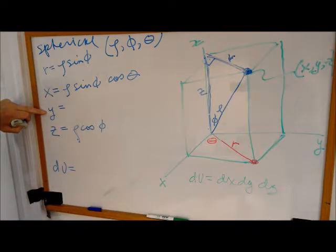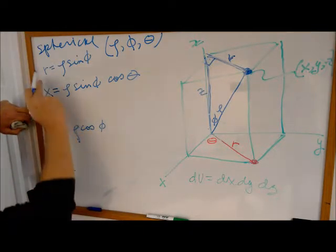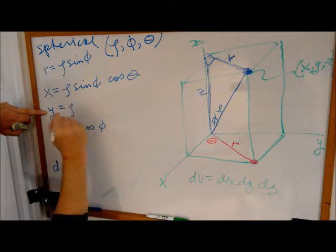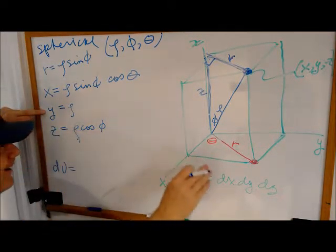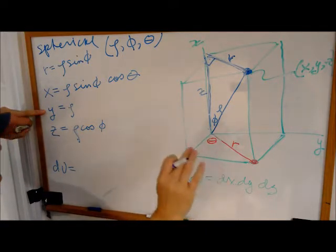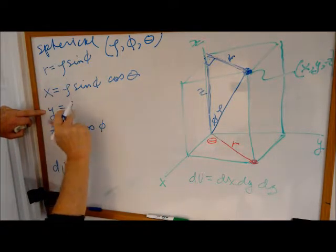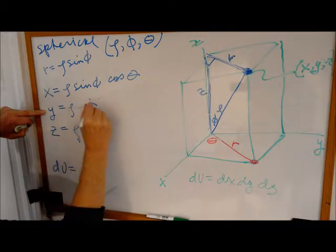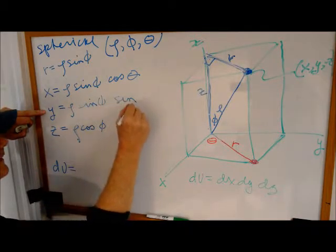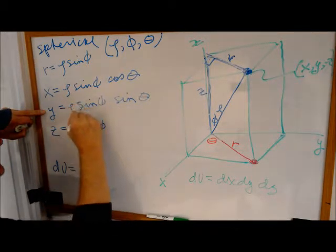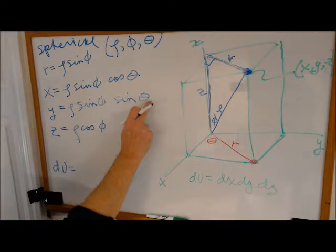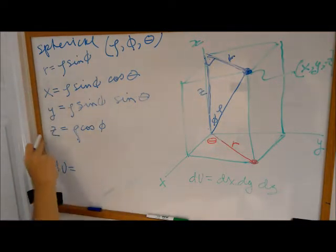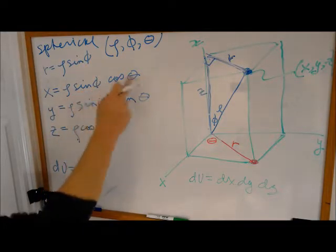And y is just r sine phi. Well, r is, I'm sorry, y is r sine theta. Well, r is rho sine phi sine theta. Rho, phi, theta. So we're done. This is x, y, z in terms of rho, phi, and theta.